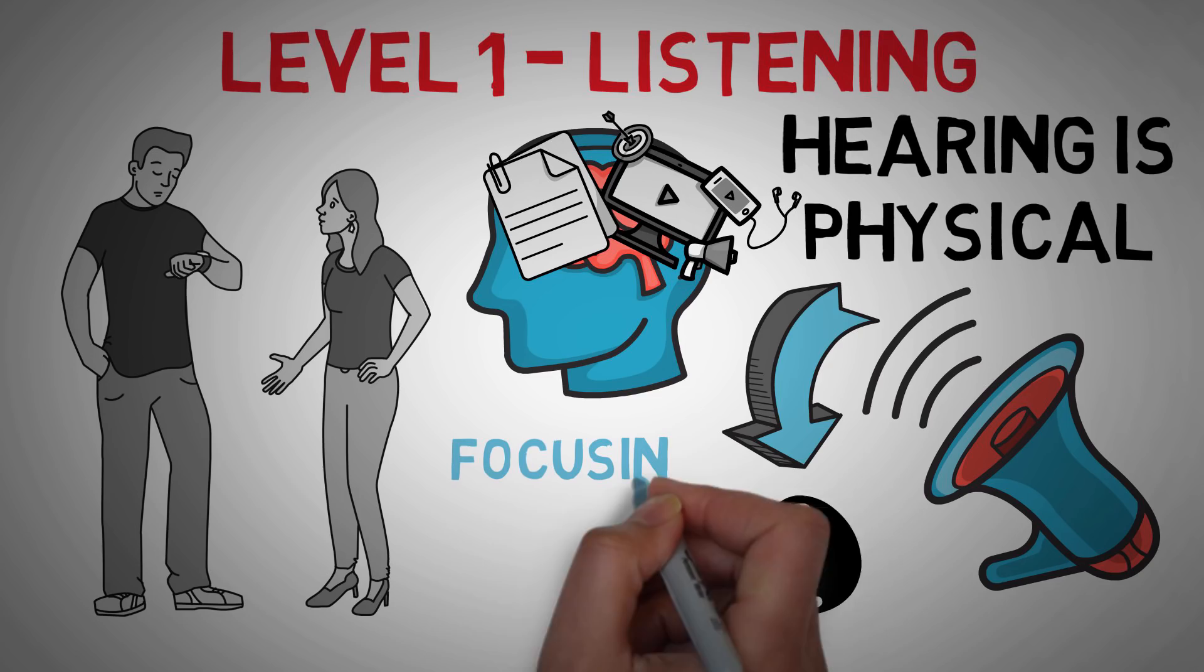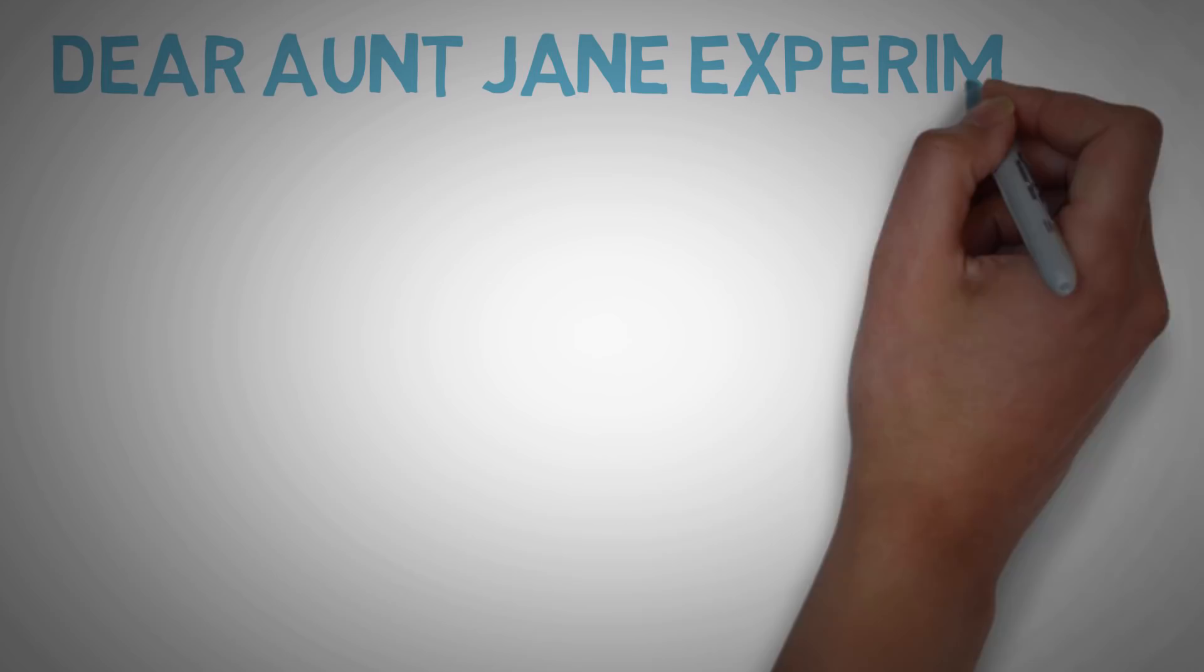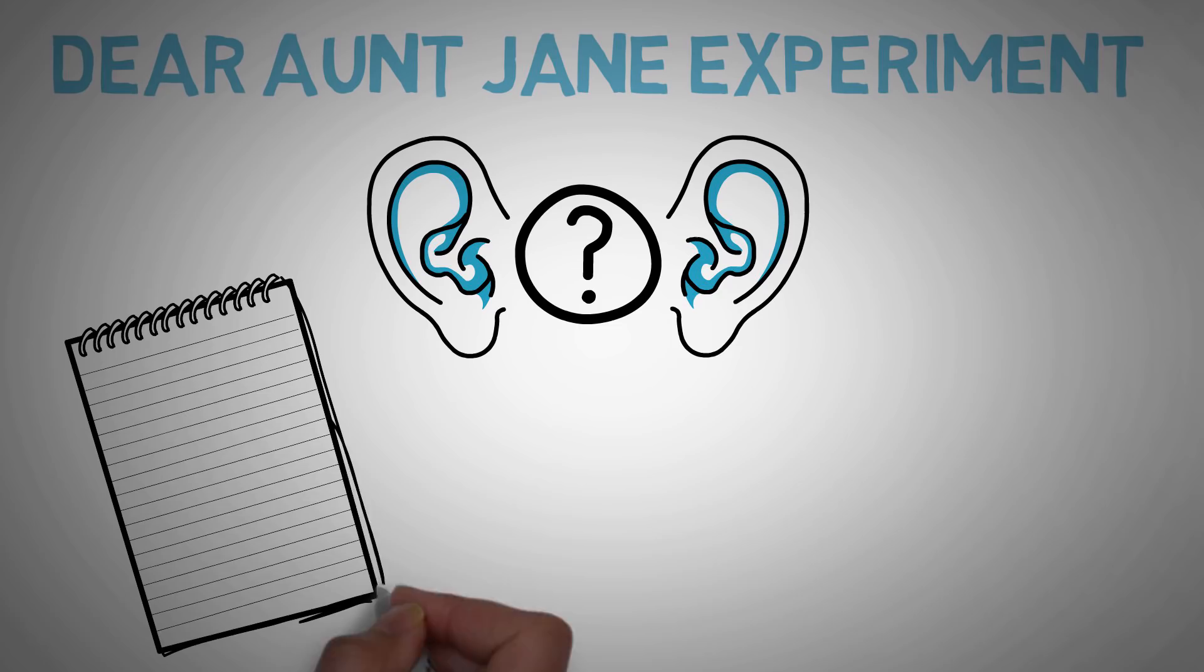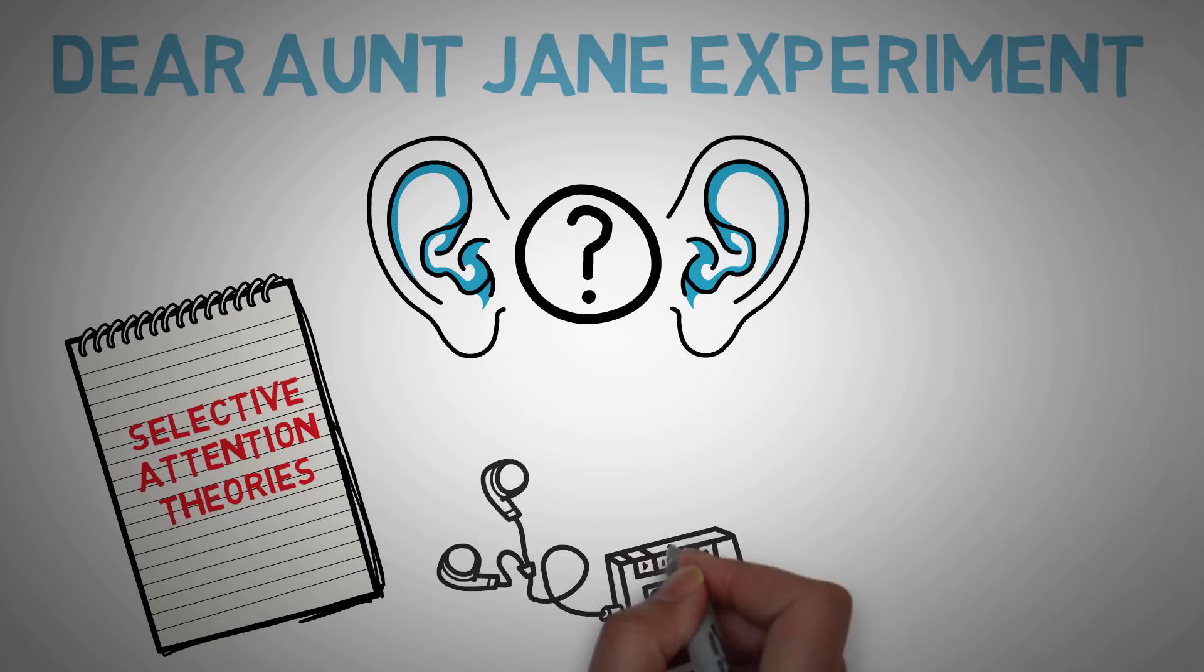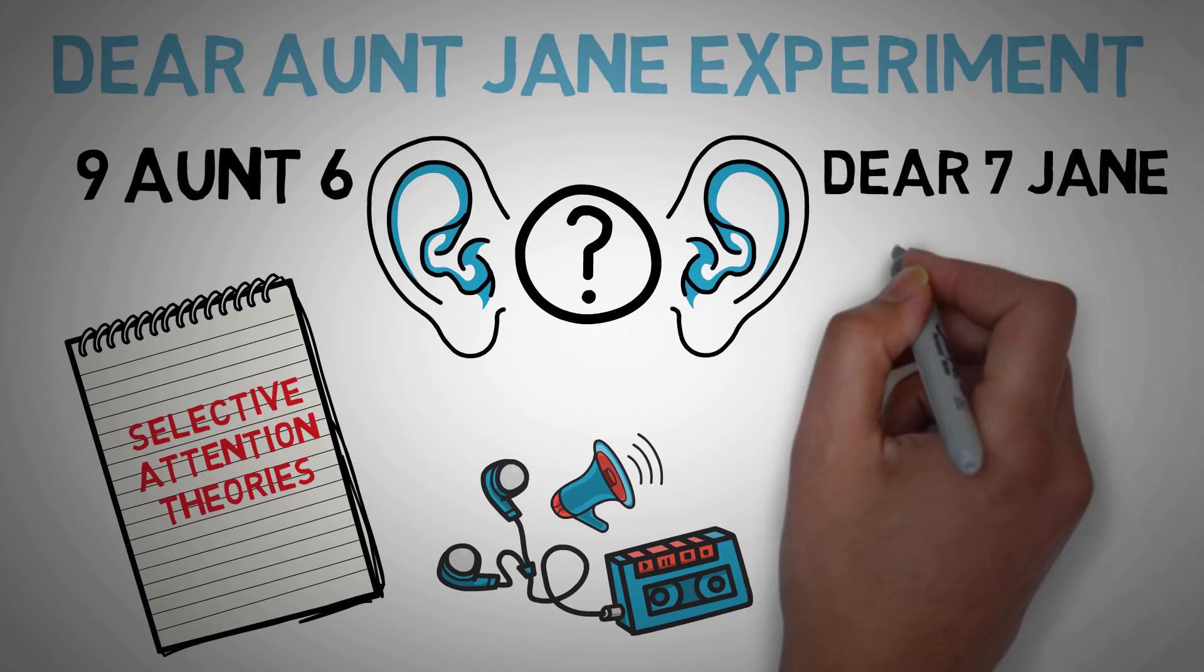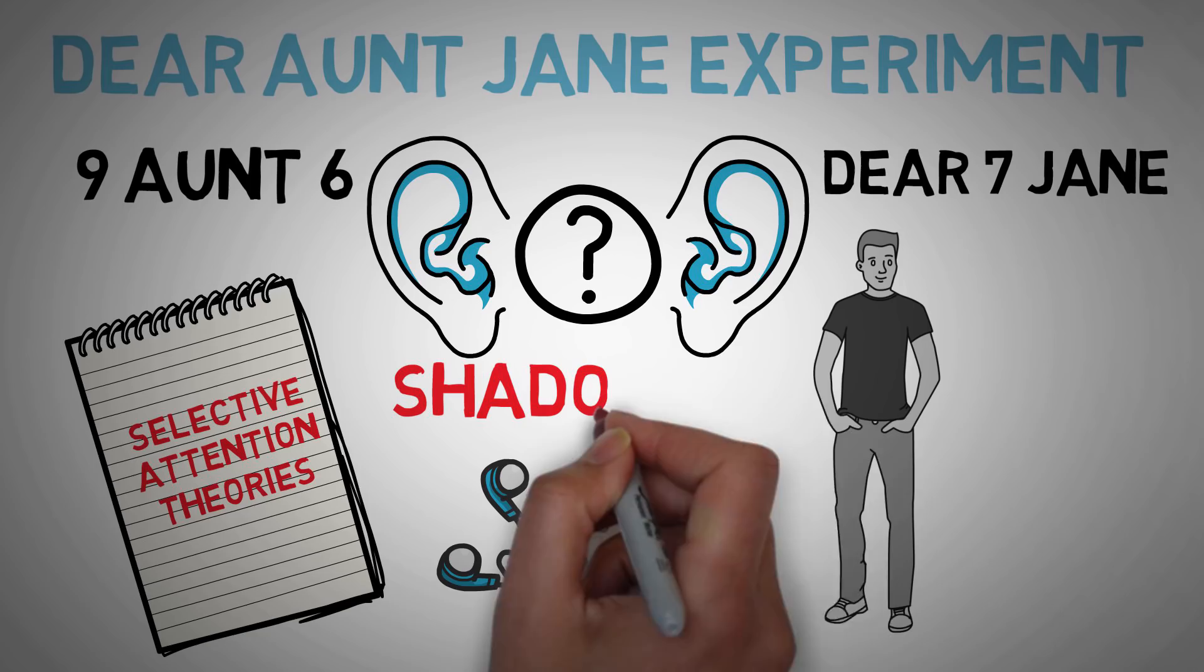So real quick, let me go down a tangent here. There's this experiment in psychology called the Dear Aunt Jane Experiment, and cognitive psychologists wanted to see if people could hear in both ears at the same time. And if they can't, how do they choose which ear to listen to? I actually wrote an entire article on selective attention theories. Anyway, they had these participants listen to two things in each ear. In one ear they played Nine, Aunt, Six. And in the other ear they played Dear, Seven, Jane. Now this is obviously just a mix of numbers and words that they wanted the participant to focus on. You can't objectively ensure that a person is focusing on something, so what you do is you tell them to repeat whatever they hear. This process is called shadowing.